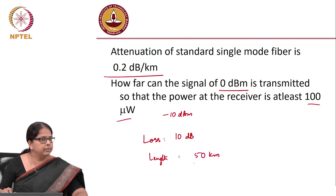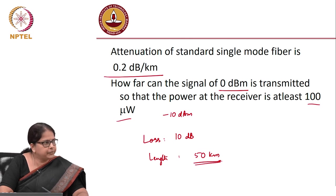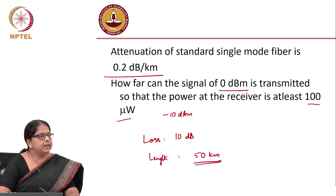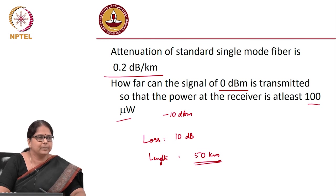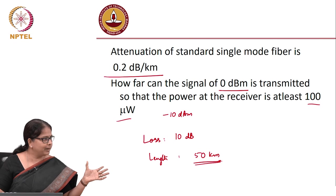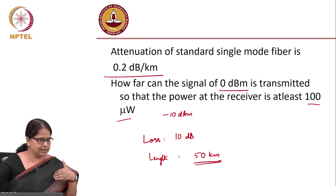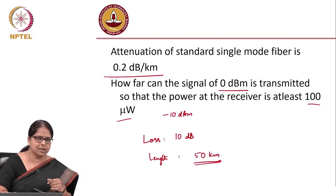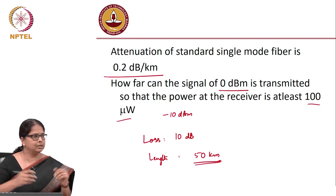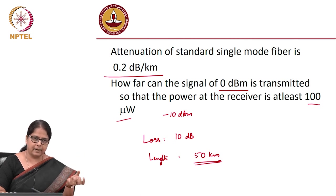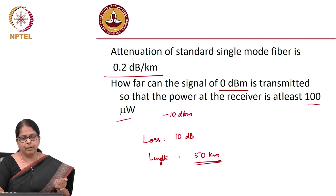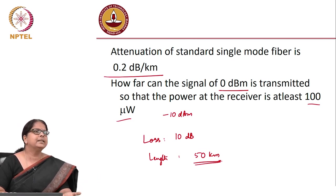After 50 km, only one-tenth of the launched power remains. For fiber communication, 50 km is not very far — submarine links span ~3000 km. The 0.2 dB/km figure is essentially the best achievable under current processes; some manufacturers have reached ~0.16 dB/km.